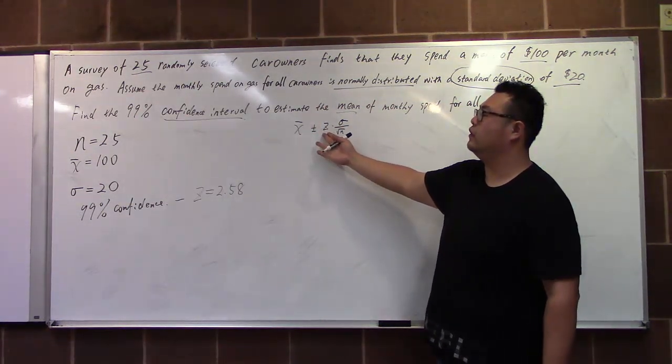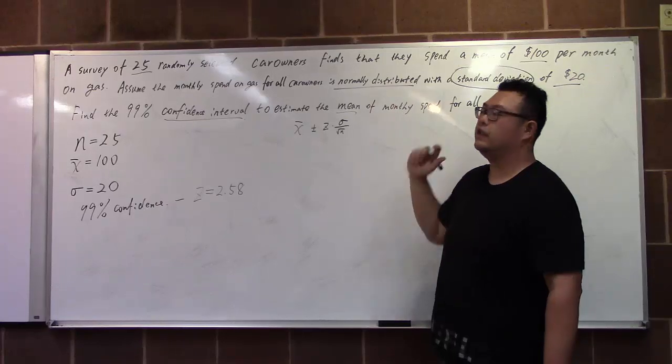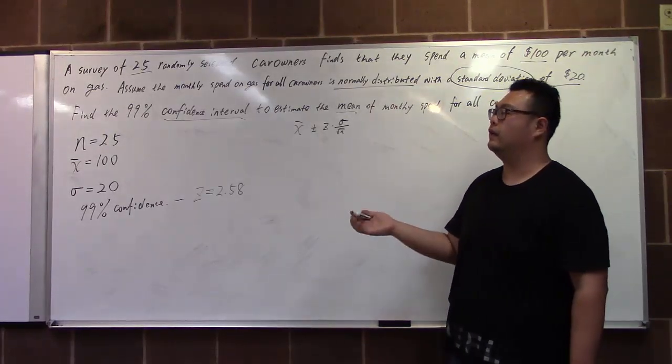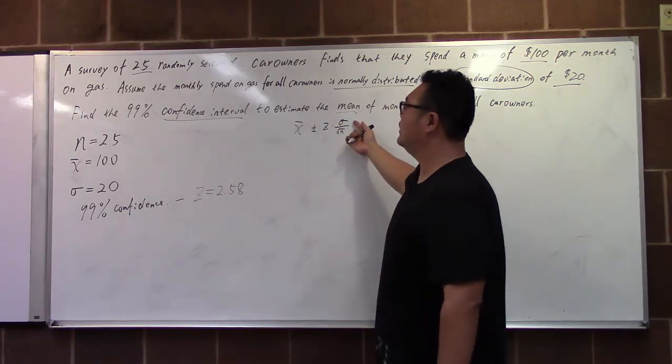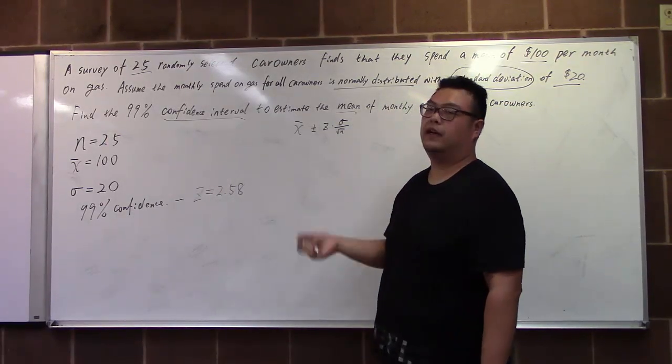The error is Z score times the standard deviation of X bar, standard deviation of the sample mean, which is standard deviation divided by radical n.